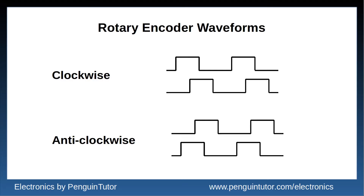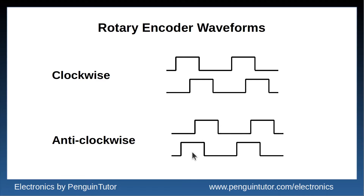This can be seen more clearly by looking at both directions alongside each other. Looking at the clockwise direction, when signal A first transitions upward, signal B is at a low value. Whereas in the anti-clockwise direction, when signal A transitions to high, signal B is already at a high. By knowing which transition is happening, the microcontroller can use this to determine the direction the dial is being turned.